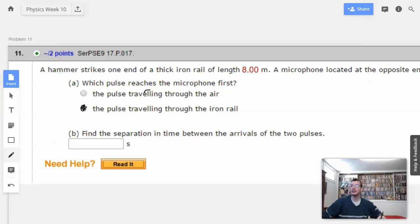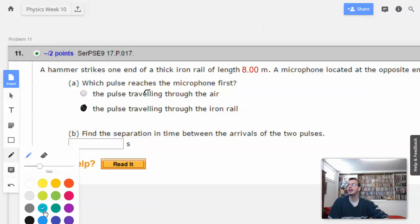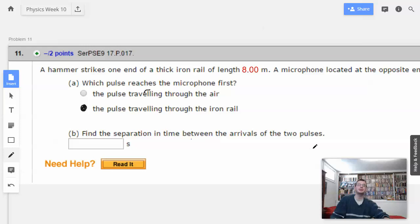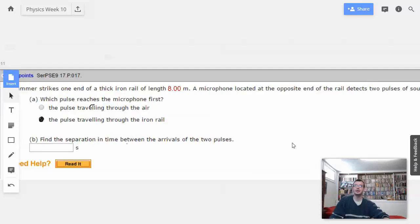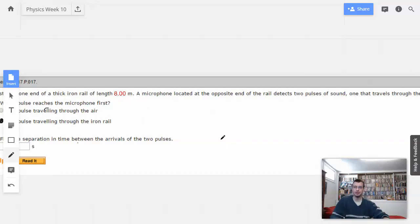Iron. Iron is way faster than air. And then they're like, by how much? Find the separation time between the arrivals of two pulses. So, it's going to be hard to bluff my way through that one.